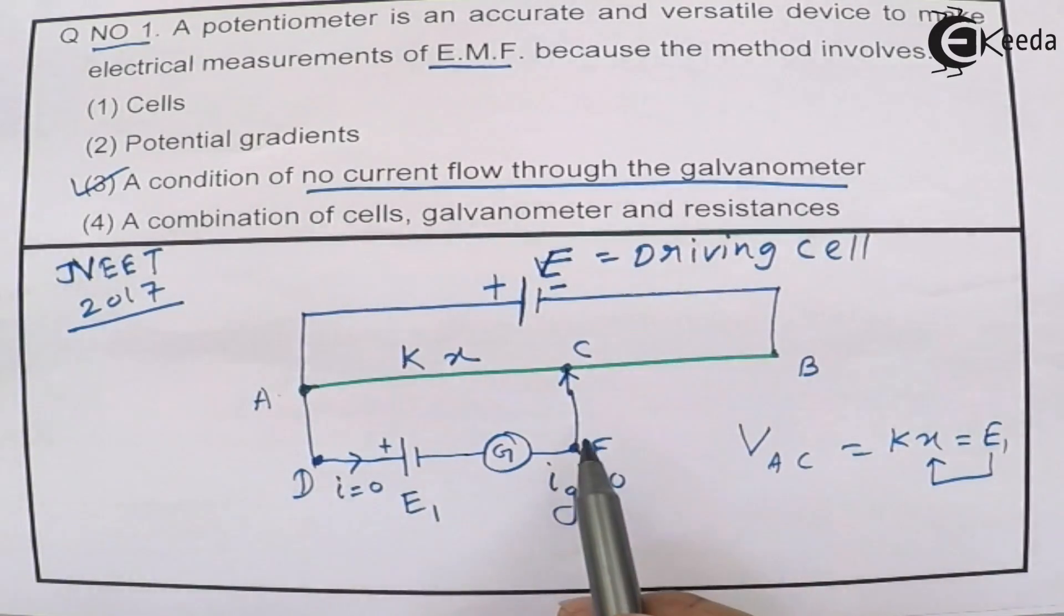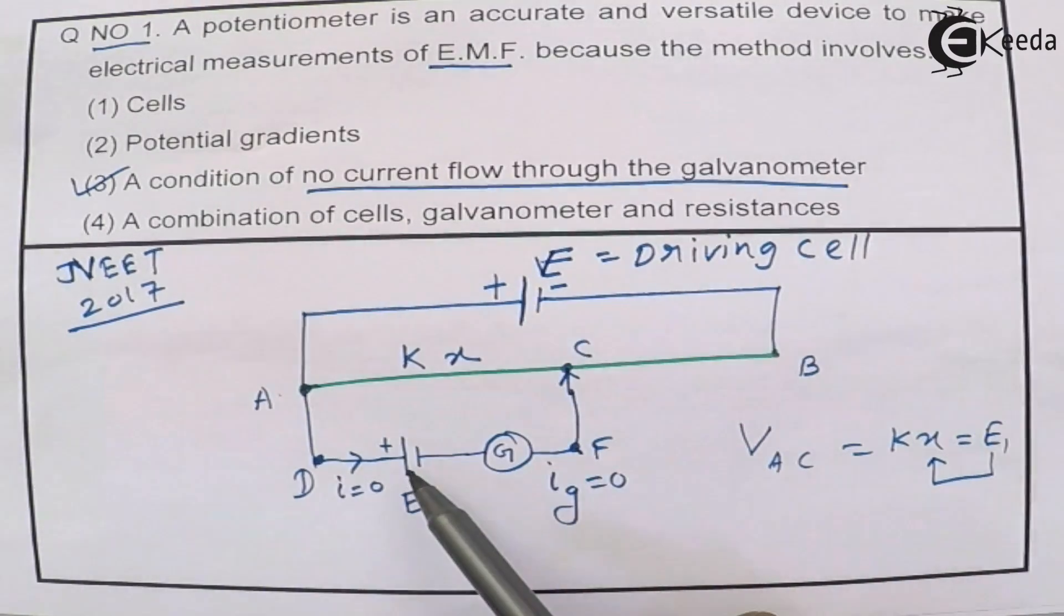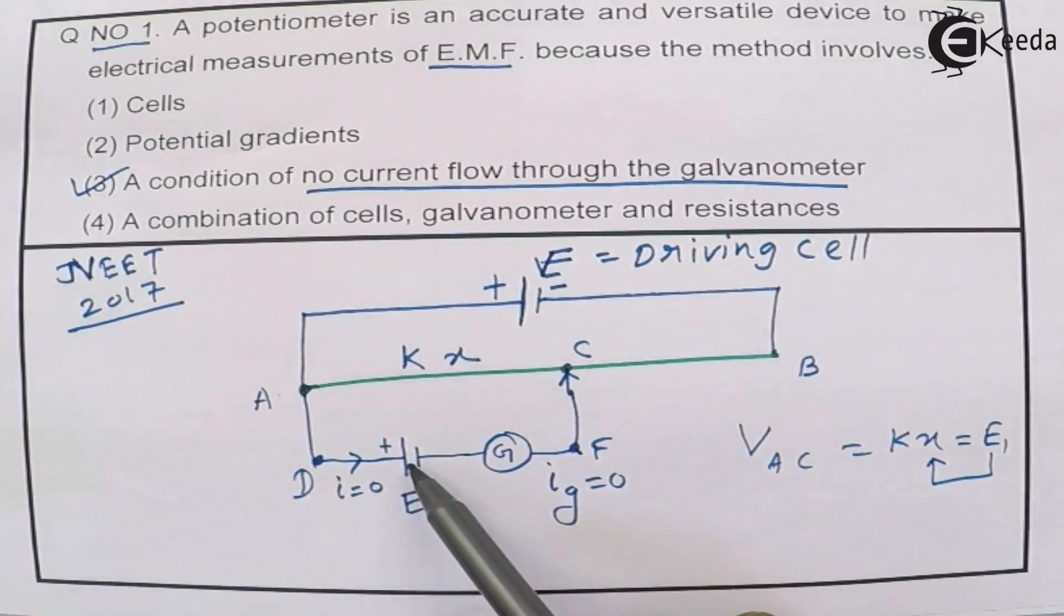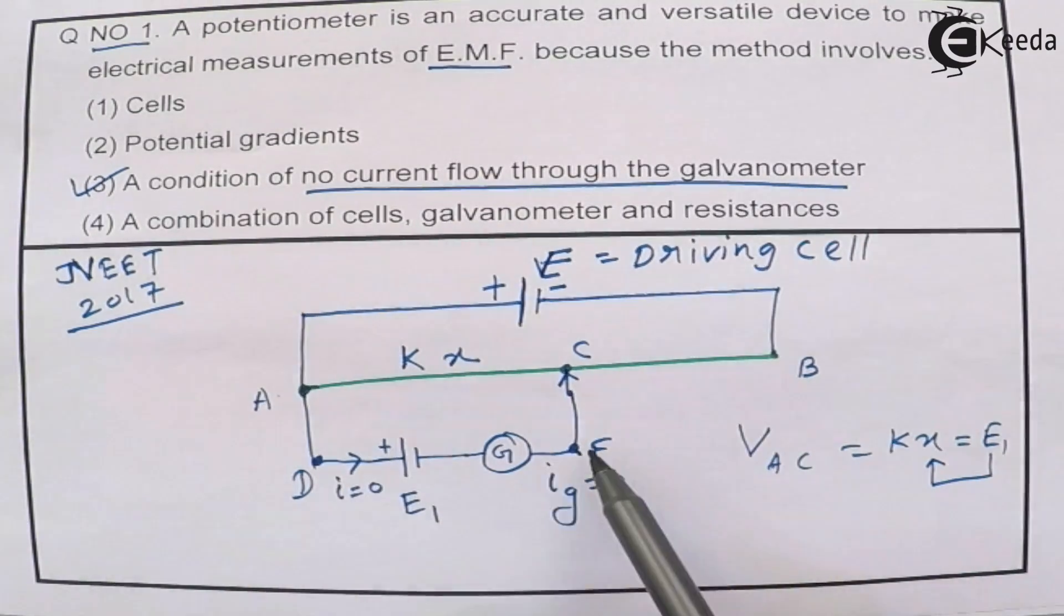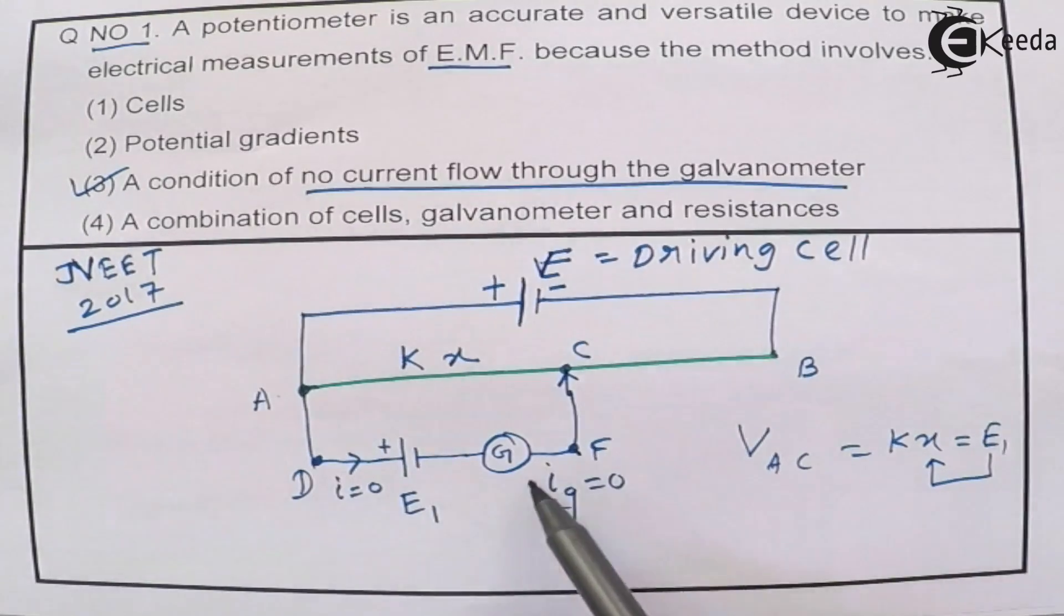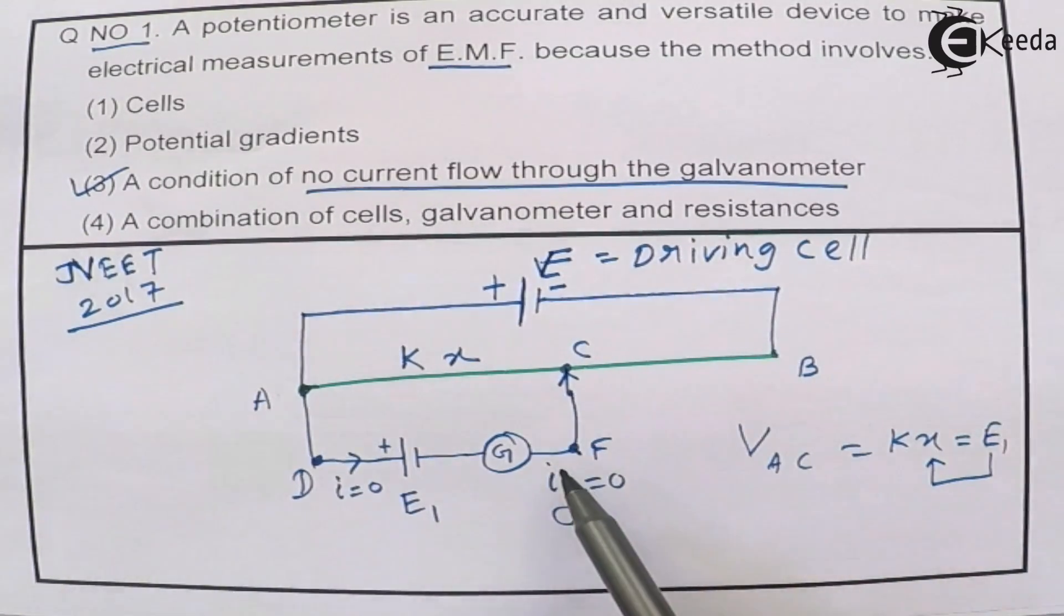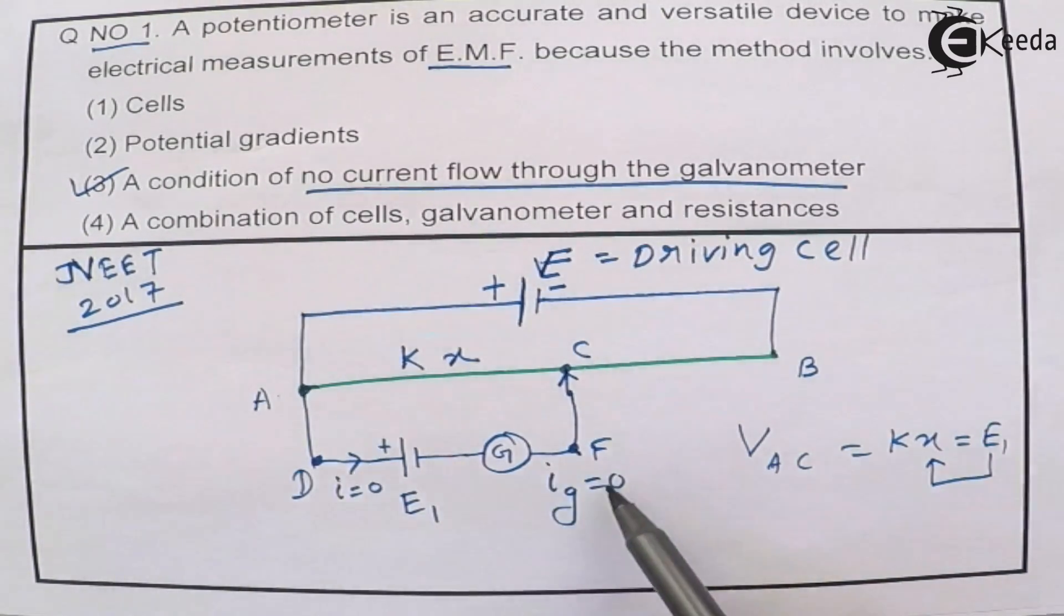But the principle is that you can create a potential difference across the wire. But the basic principle is that the current should be zero because if I take a cell which is having greater EMF value than the potential difference created across the wire, then you will not find any current flowing through this. It means this condition will not be achievable. That means you will not get a null point.